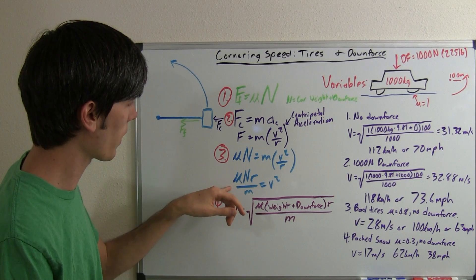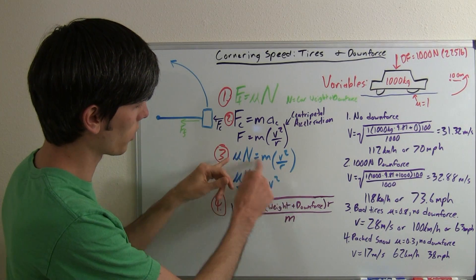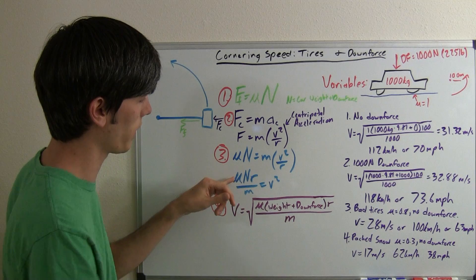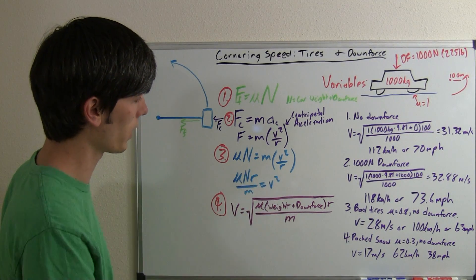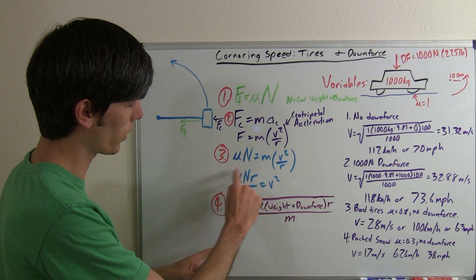So what we've got going on, mu n, we can multiply that r over here and divide by the m. So we've got mu n r over m equals v squared. Now we can rearrange this a little bit. Take the square root of this.